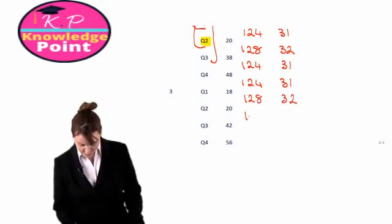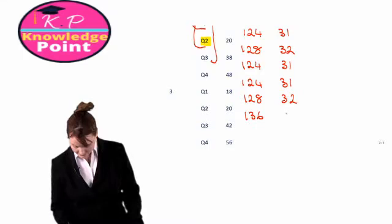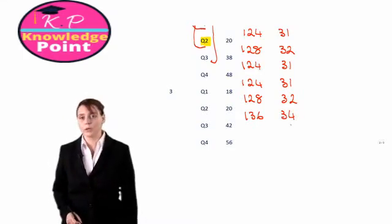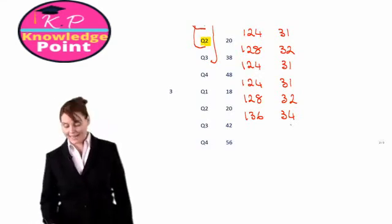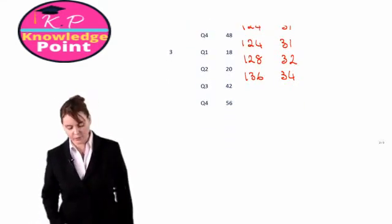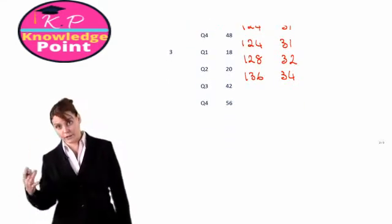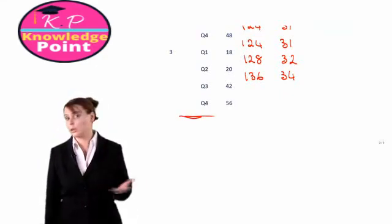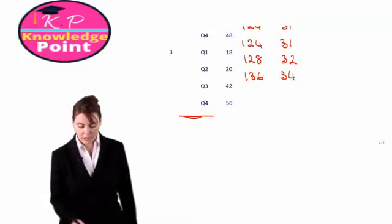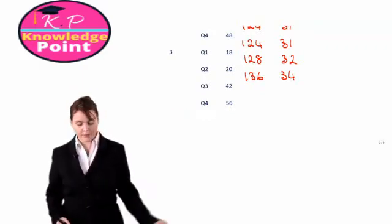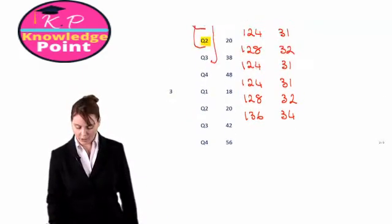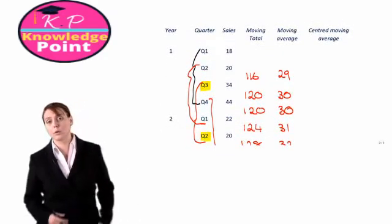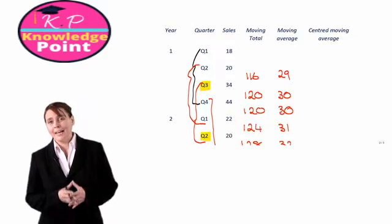Our last moving average is for quarters 1 to 4 of year 3. We can't go any further because to calculate an additional moving average we would need to know the sales figures for quarter 1 of year 4. So we stop there — we have our moving averages for each 4-quarter period.